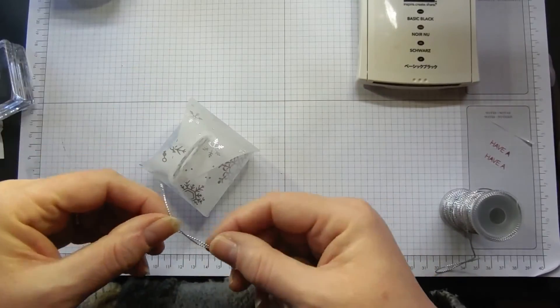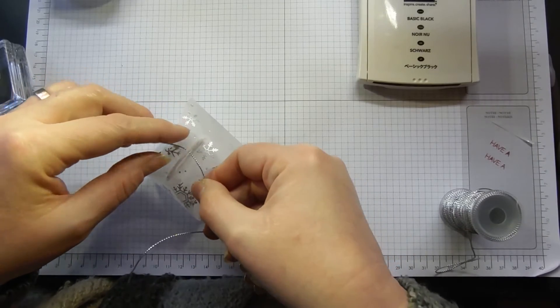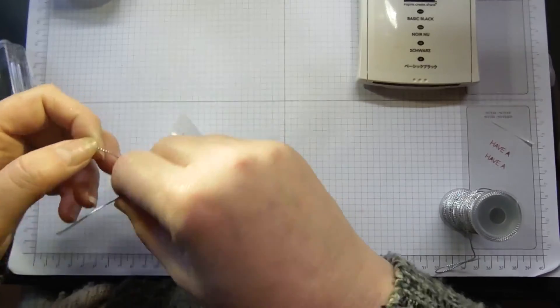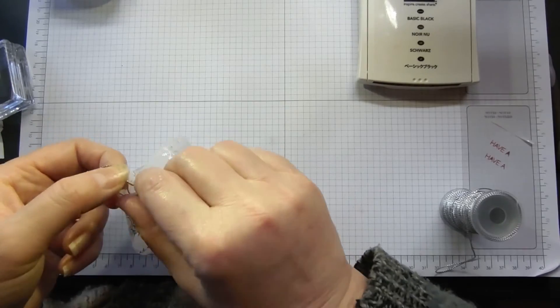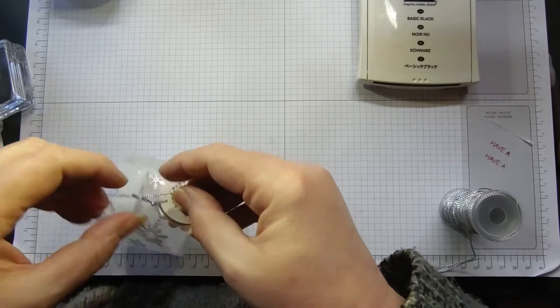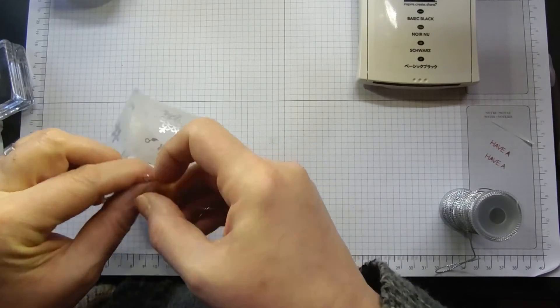All that does is then it goes through here. Tie another little knot, just a gentle one, and a little bow.